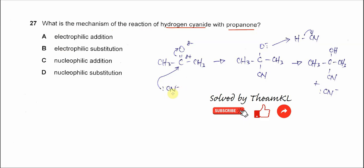It starts with the cyanide ion. The cyanide ion is a nucleophile and this nucleophile will attack the partial positive carbon here in the propanone, the carbonyl carbon.